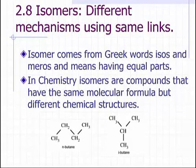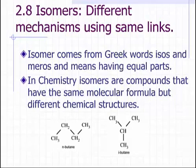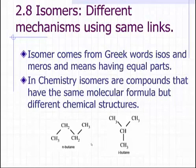Isomers. The word 'isomer' comes from the Greek words isos and meros, meaning 'having equal parts.' From chemistry, isomers are compounds that have the same molecular formula but different chemical structures. For example, consider n-butane and i-butane. Both have four carbon atoms and ten hydrogen atoms, but the arrangement of these atoms is different, resulting in different compounds.